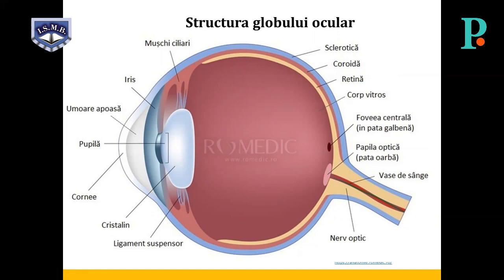Cristalinul are forma unei lentile convergente, elastice, învelit într-o capsulă numită cristalidă. Este situat în spatele irisului și legat de corpul ciliar prin ligamentul suspensor. Puterea de refracție este reglabilă; neacomodat, contribuie cu aproximativ o treime la puterea de refracție a ochiului, reprezentând 20 de dioptrii. Umoarea sticloasă sau corpul vitros este un gel transparent ce umple cavitatea posterioară a globului ocular între cristalin și retină; elasticitatea sa este esențială în amortizarea șocurilor, contribuind la protecția retinei.